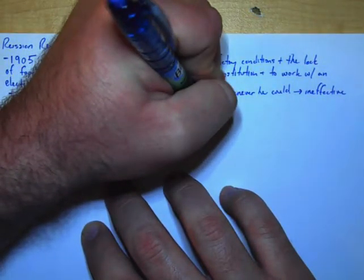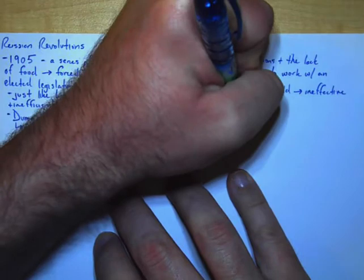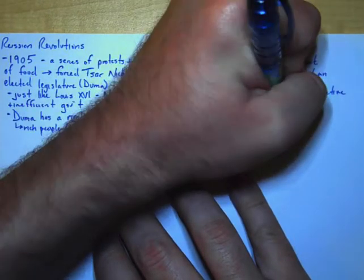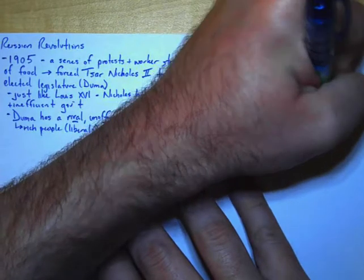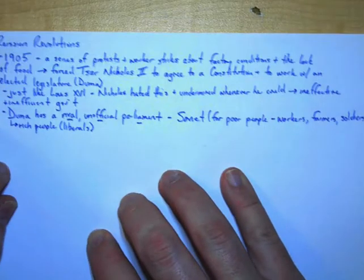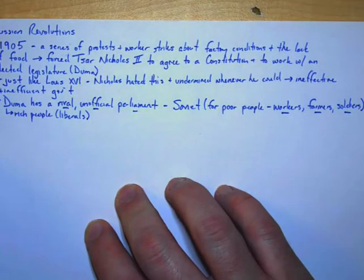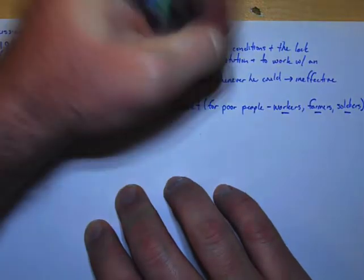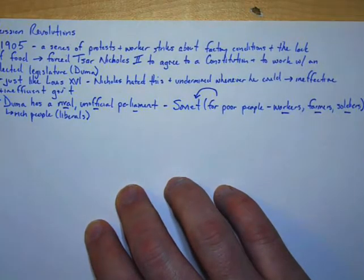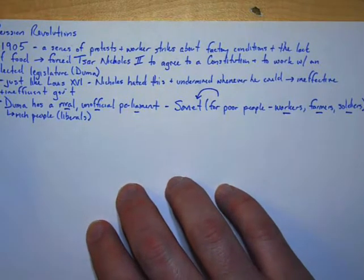The Duma was for the rich people, the liberals. This rival, unofficial parliament is called the Soviet. The Soviet is for the poor people - workers, farmers, and soldiers. These three groups of people are going to be very important moving forward.